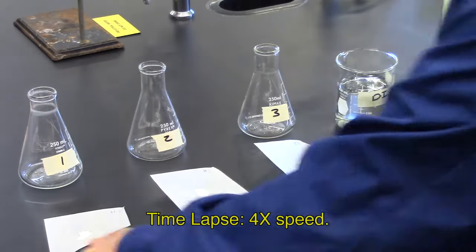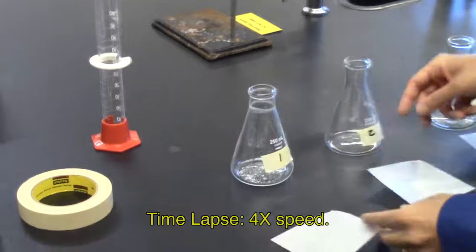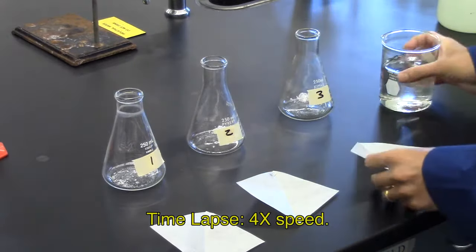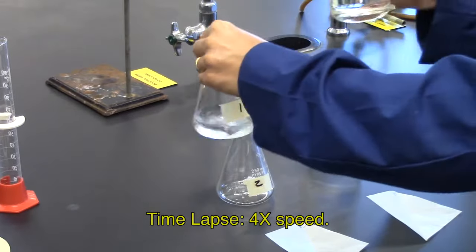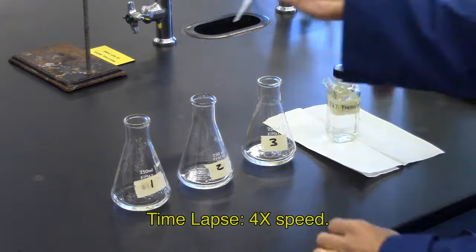Next, label 3 250 ml or 125 ml Erlenmeyer flasks and transfer each sulfamic acid sample to the appropriate labeled flask. To each flask, add approximately 25 ml of distilled water and 2 to 3 drops of phenolphthalein.